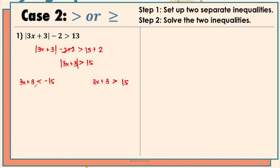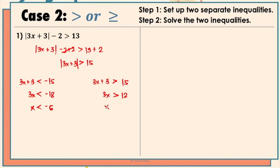On the left side, we have 3x plus 3 is less than negative 15. To solve for x, we remove the positive 3, giving us 3x is less than negative 18. Then removing the numerical coefficient 3 gives us x is less than negative 6. On the right side, we have 3x plus 3 is greater than positive 15. Removing positive 3 gives us 3x is greater than positive 12, and removing the coefficient 3 gives us x is greater than positive 4. To express that in set builder notation, we have the set of x such that x is less than negative 6 or x is greater than positive 4. That is the final answer.